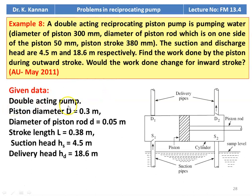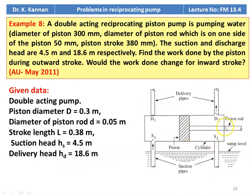It is a double acting pump. Piston diameter D = 0.3 meter, diameter of the piston rod = 0.05 meter, stroke length L = 0.38 meter, suction head = 4.5 meter, delivery head = 18.6 meter. Here the piston rod of diameter 0.05 meter is on one side, and the diameter of the cylinder is 0.3 meter.